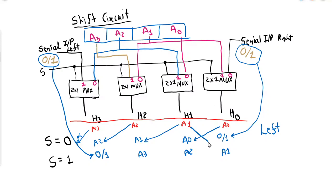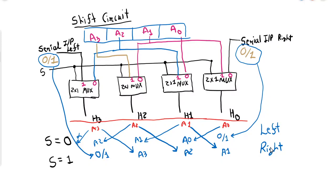With S equals one, A1 is shifted one position to the right, A2 is shifted one position to the right, A3 is shifted one position to the right, and the vacant space is filled by the serial input from the left. So when S equals one, shift right is performed. This circuit is for your understanding; in a real-life scenario the actual circuit is different. Thank you.